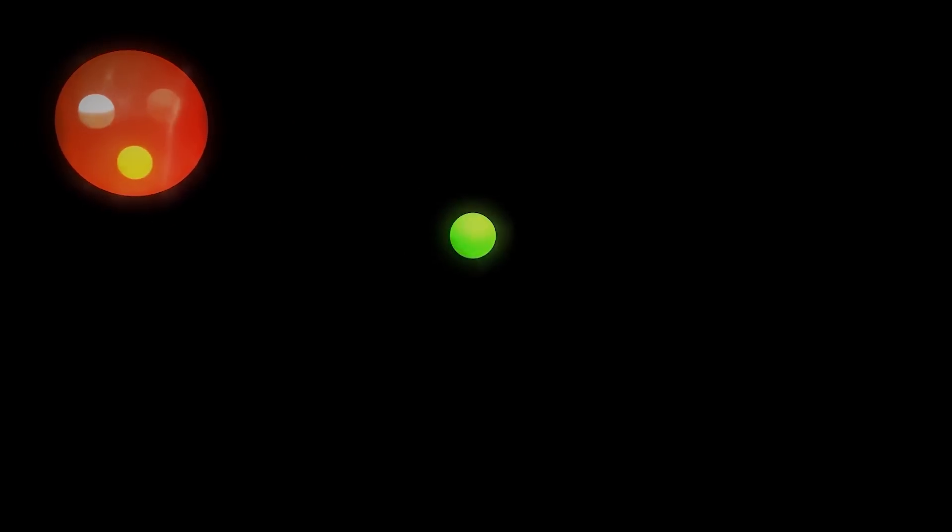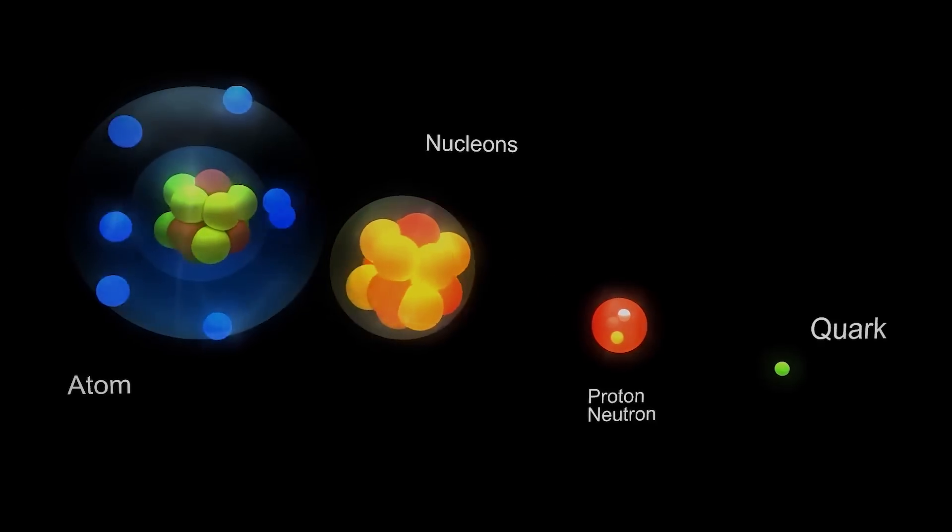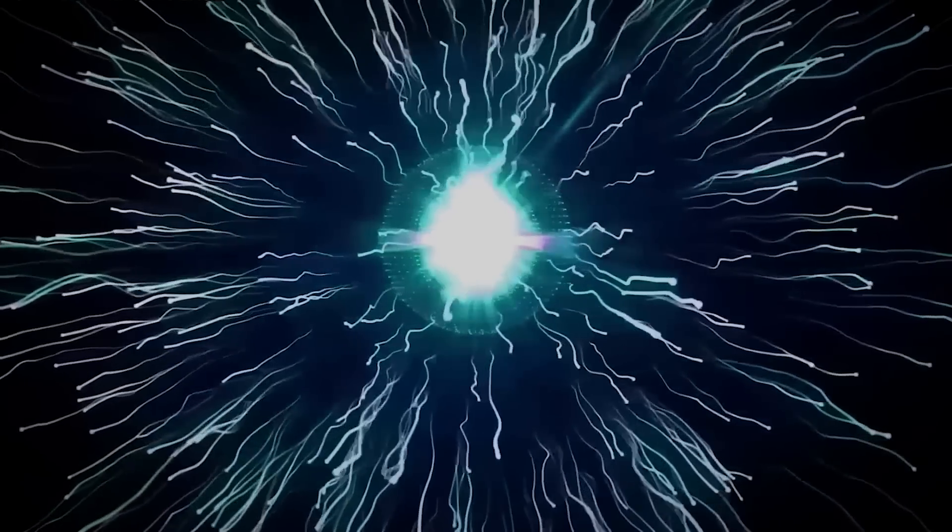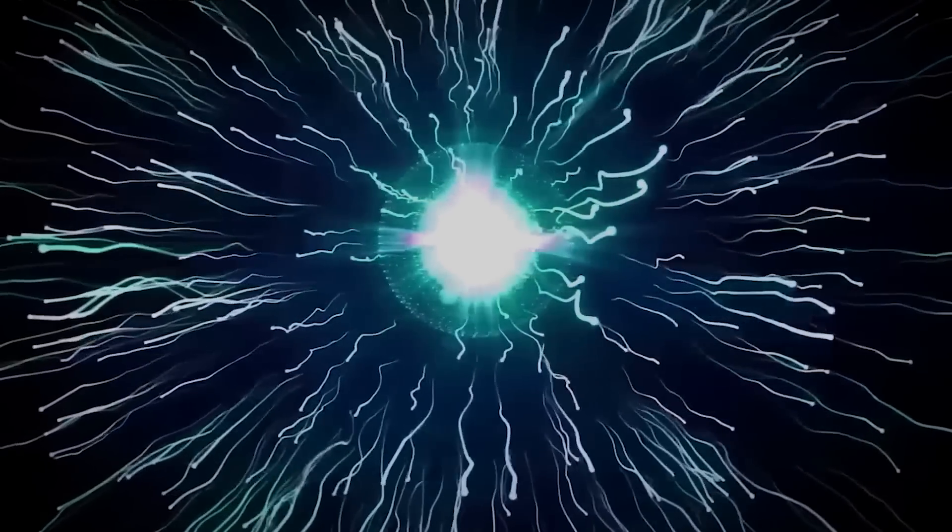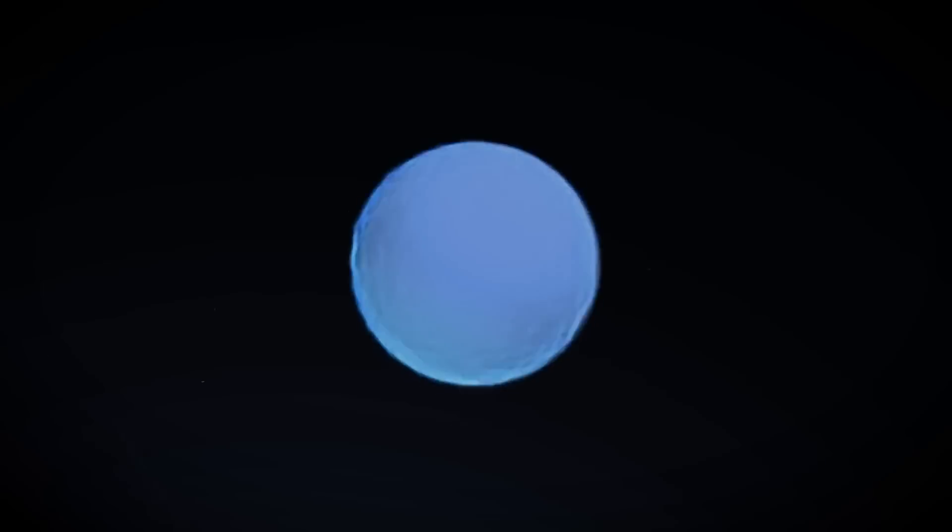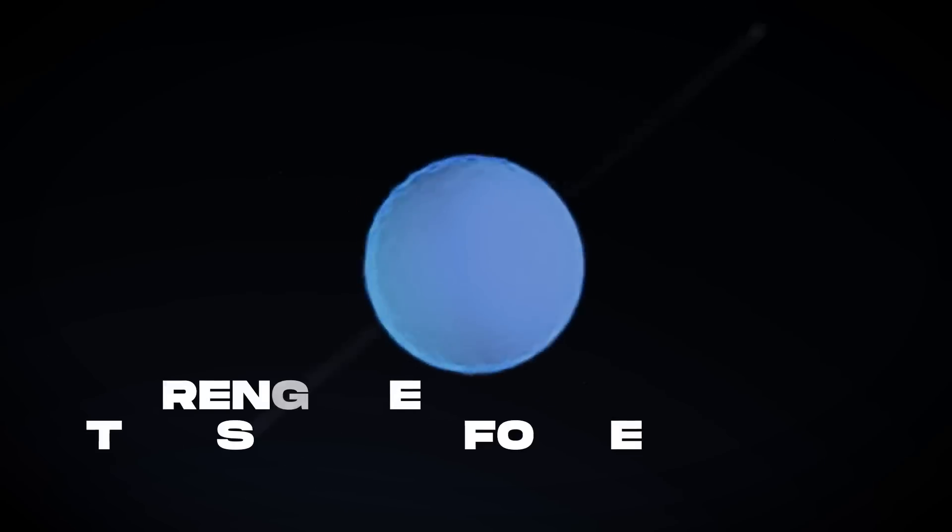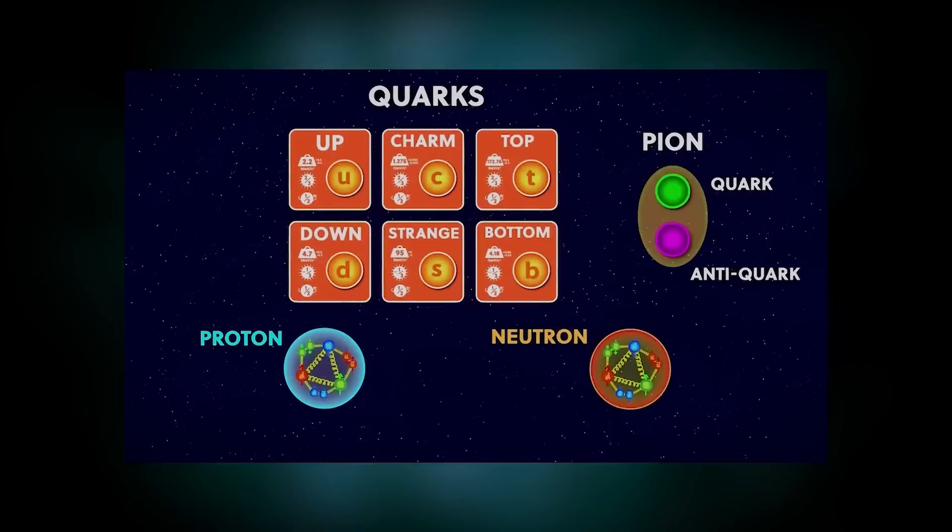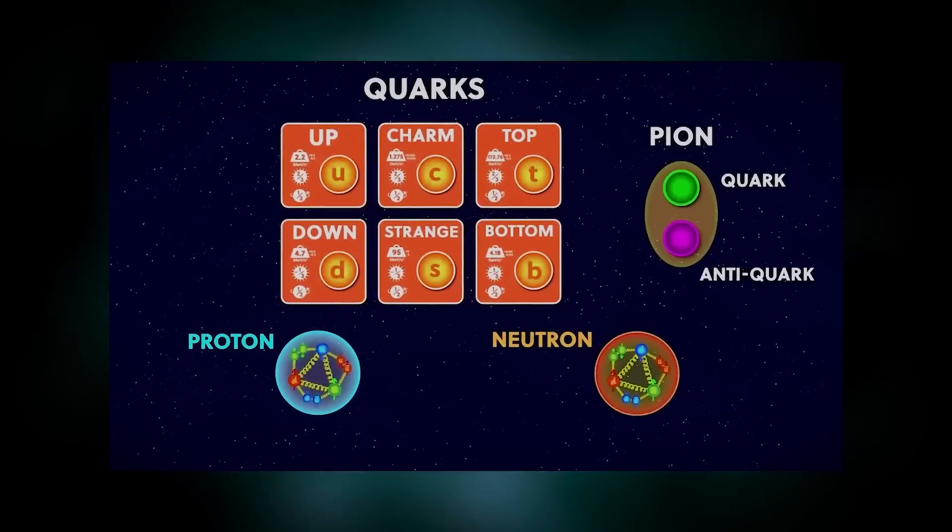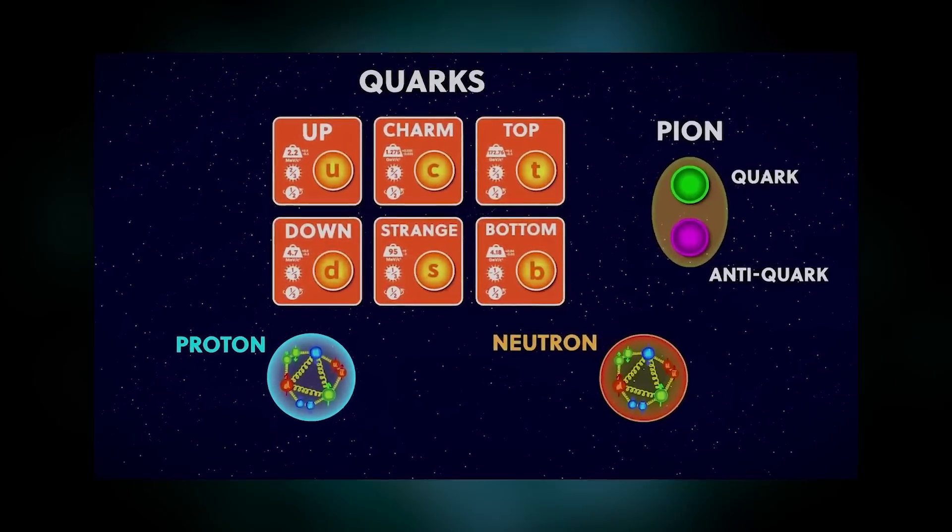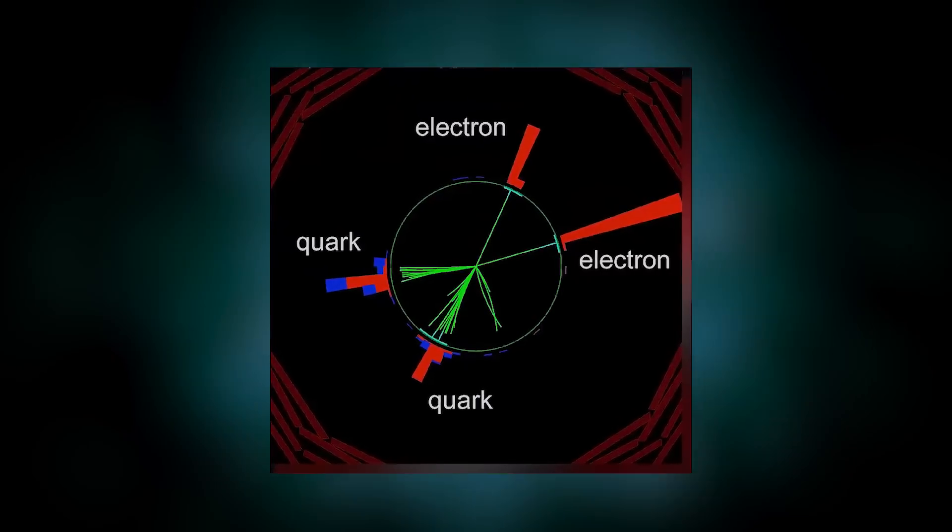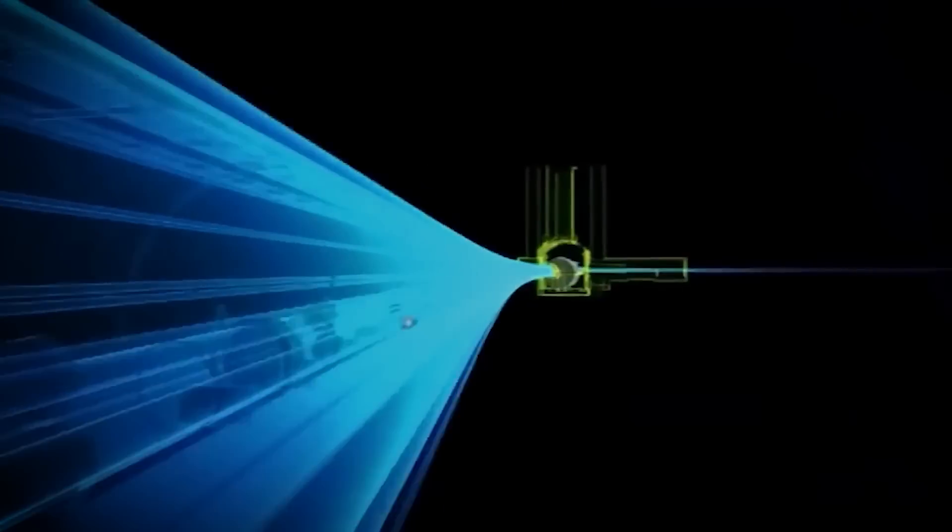Due to the way gluons interact with quarks, the strong force operates much differently from electromagnetism. For instance, separating two charged particles weakens the electromagnetic force, but separating two quarks strengthens the strong force. All of the stronger quarks are thus locked inside hadrons, which are comprised of two or more quarks and consist of protons and neutrons, for all eternity, until they are blasted open at extremely high speeds, as CERN is doing.